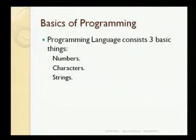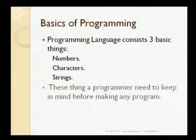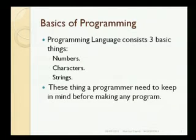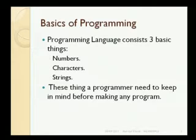As you can see, a character, number, and a string. If we take output, it would be either 0 to 9, it would be a to z, or it would be a combination of characters. So these are the three basic things that any programmer needs to keep in mind. If these three things are clear, then you can develop your logic very easily and do your C programming in a precise way.